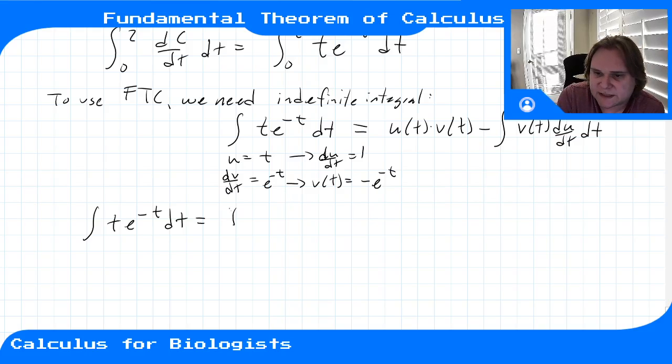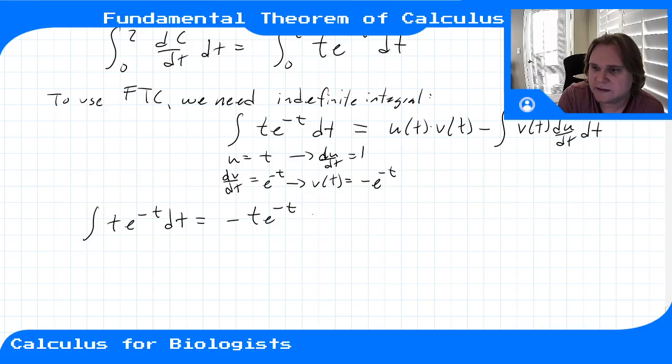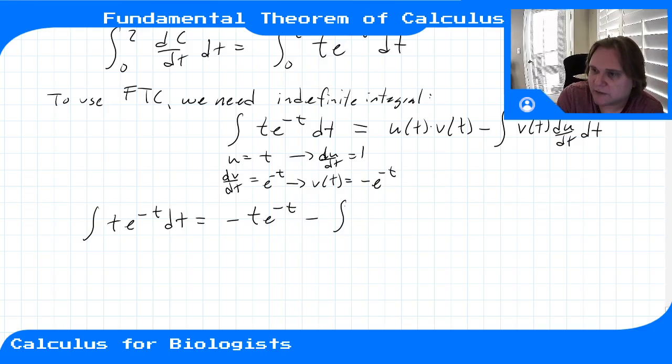Plugging in, this gives −t e^(−t) minus the integral of −e^(−t) dt.